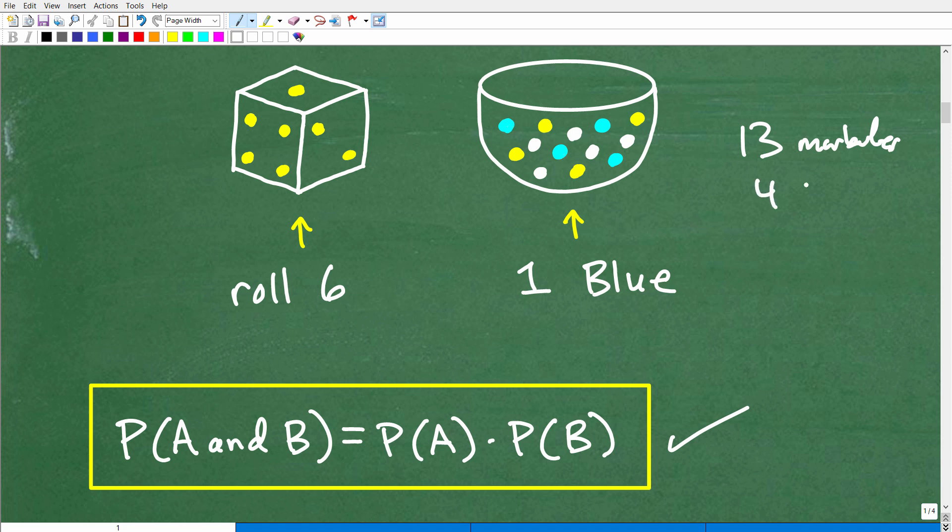We have 13 marbles, and we have how many blues? We have 1, 2, 3, 4 blues. We have 1, 2, 3, 4 yellows. And then that leaves us with, of course, 5 whites. So a total of 13. We have 4 blues, 4 yellows, and 5 whites, 13 marbles in total.